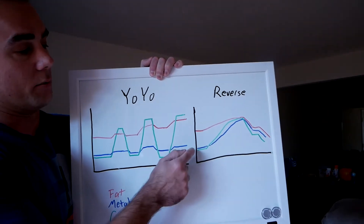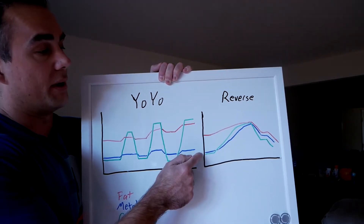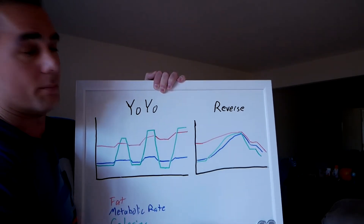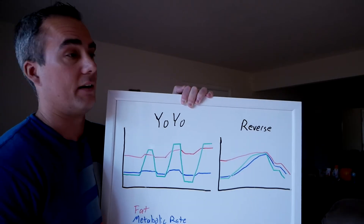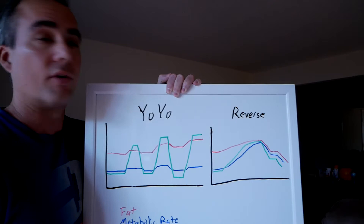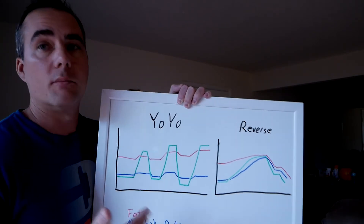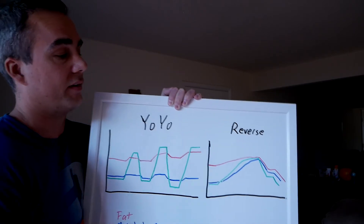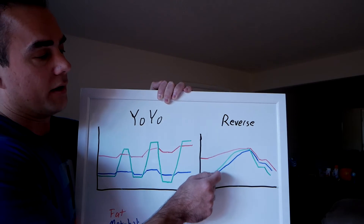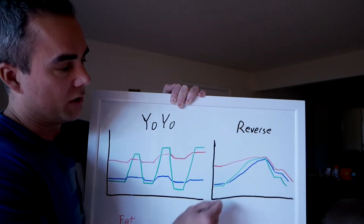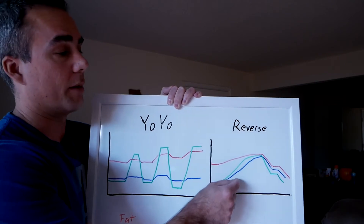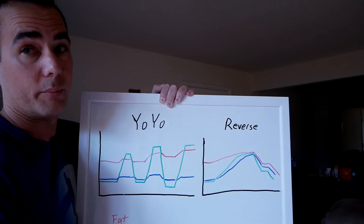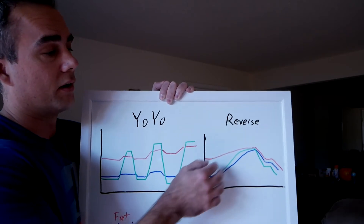With reverse dieting, we're starting the same — high body fat, low metabolic rate and calories — but now you're slowly increasing calories over time to minimize body fat gain. There's probably going to be some body fat gain during this process; most people will gain a little because you're eating more than your body can maintain on. But the difference is that with a steady increase in calories, you get a steady increase in metabolic rate too — so body fat is increasing only a little because you're keeping these things closer together.